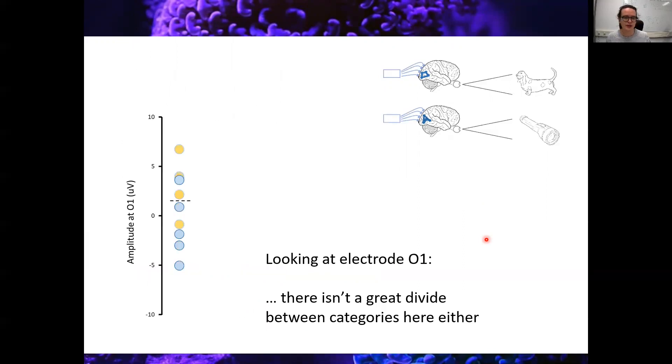And if we took another electrode, if we took O1, for example, again, such a divide doesn't really help. I mean, it's a little better in the case of O1, but still we could do better.